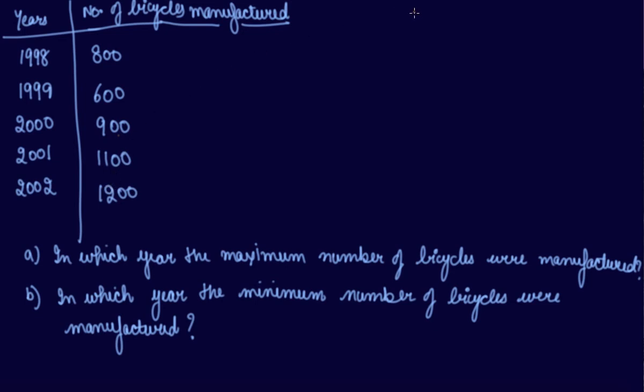So can I choose 1 unit length is equal to 100 bicycles? So let's take it on the scale of 100. This is an x-axis. This is your y-axis. This is your x-axis and your y-axis. I told you on y-axis, you will take the scale.